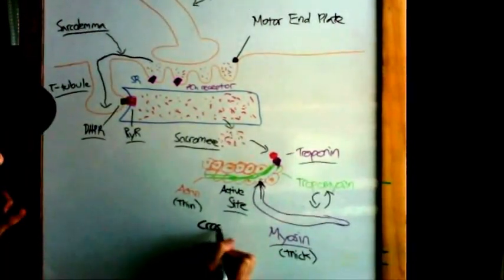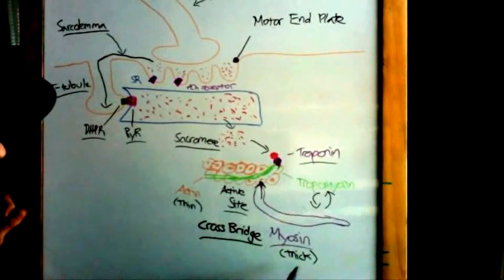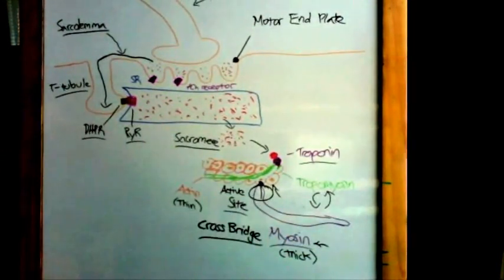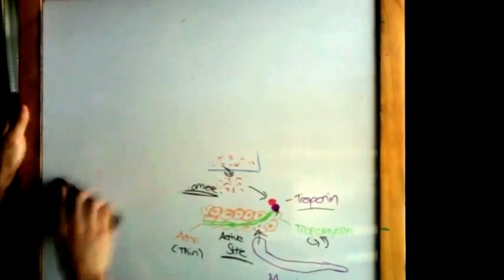An important note to write down is the formation of the crossbridge. The crossbridge is formed when the myosin head binds to the active site on actin. Once the crossbridge formation occurs, the contraction cycle begins.